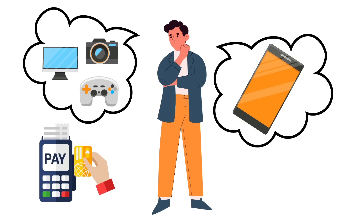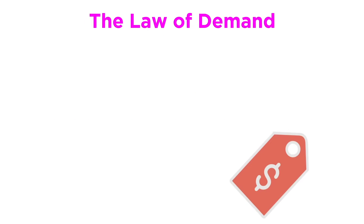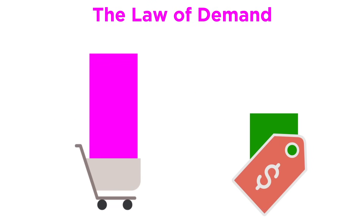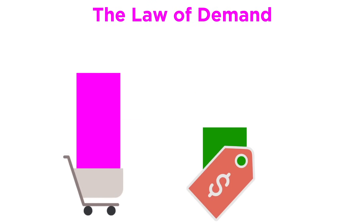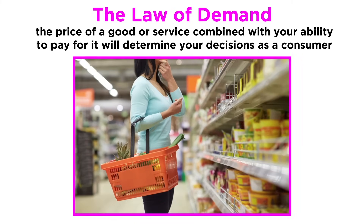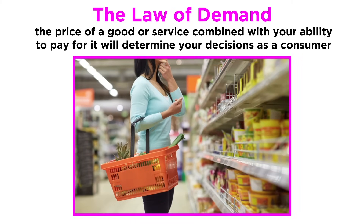Remember, we all want a lot, but we can't have it all. The law of demand states that when stuff is cheaper, consumers will buy more of it. When stuff is more expensive, consumers will buy less of it. In other words, the price of a good or service, combined with your ability to pay for it, will determine your decision as a consumer whether or not to buy.